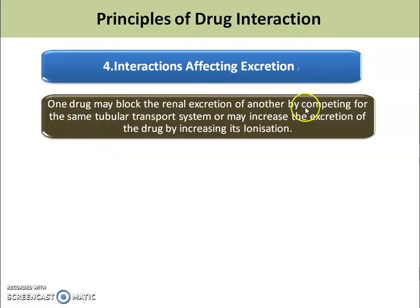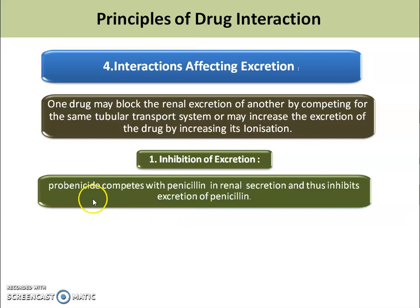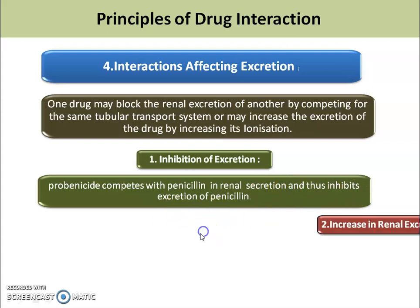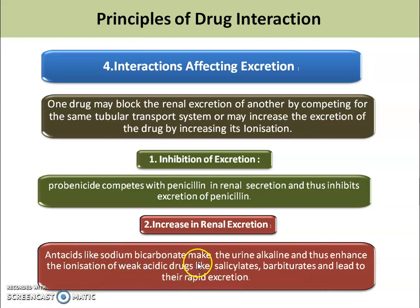The interaction affecting excretion: one drug may block the renal excretion of another by competing for the same tubular transport system, or may increase excretion by increasing ionization. First, inhibition example: probenecid competes with penicillin in renal secretion and thus inhibits the excretion of penicillin. Second, increased renal excretion: antacids like sodium bicarbonate make the urine alkaline, thus enhancing ionization of weak acid drugs like salicylates and barbiturates, leading to their rapid excretion.